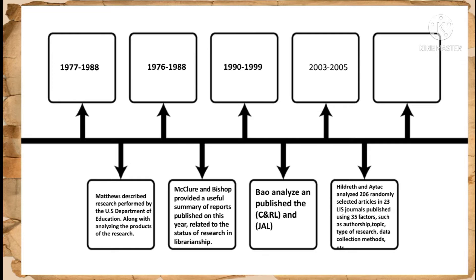Here is a timeline of previous library research according to year. On 1977 to 1988, Matthias described research performed by the U.S. Department of Education along with analyzing the products of the research. On 1976 to 1988, McClure and Bishop provided a useful summary of reports published related to the status of research and librarianship. On 1990 to 1999, Bao analyzed and published in CNRL (College and Research Libraries) and JAL (Journal of Academic Librarianship).